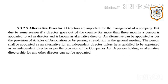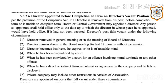Director appointed before completion of term on director's vacant position: As per the provisions of the Companies Act, if a director is removed from their post before completing their term or is unable to complete the term, the board or Central Government may appoint a director. Any person so appointed shall hold office only up to the date up to which the director in whose place they are appointed would have held office, had the post not been vacated.